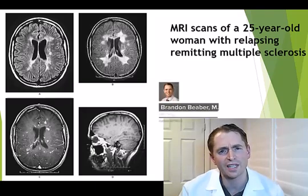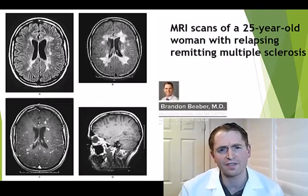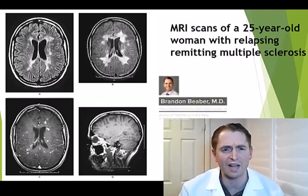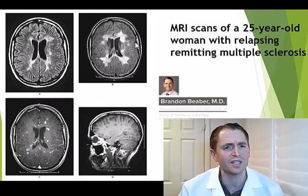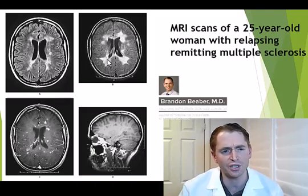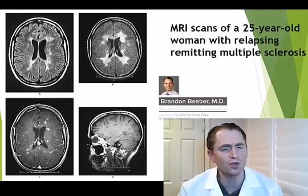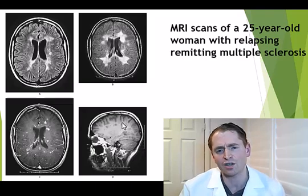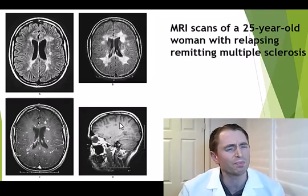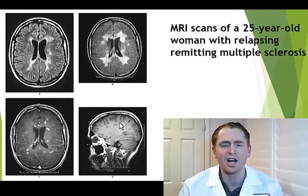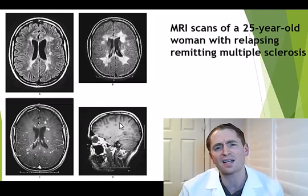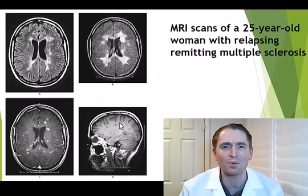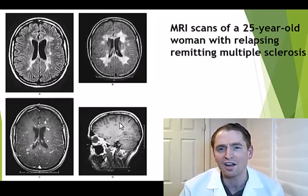These are images from an MRI scan of a 25-year-old woman with relapsing MS. You can see the abundant periventricular T2 lesions, numerous gadolinium enhancing lesions, and on sagittal images T1 dark holes. But what are these lesions? What's inside of them? Today we'll take a look at the histopathology of multiple sclerosis.